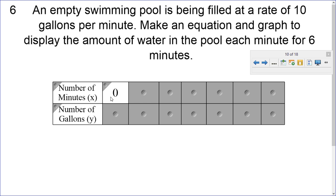If I filled it up for no minutes, I have no water, no gallons. If I filled it up for one minute, and it's filling at a rate of 10 gallons per minute, that'd be 10 times 1, which would be 10 gallons. If I filled it up for 2 minutes, it'd be 10 times 2, that'd be 20 gallons. If I filled it up for 3 minutes, it'd be 10 times 3, 30 gallons of water.